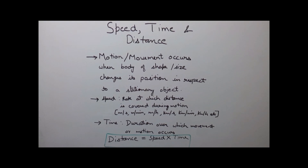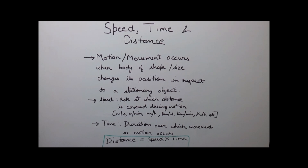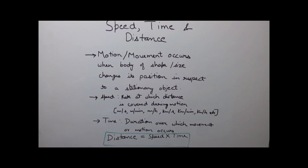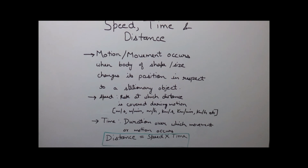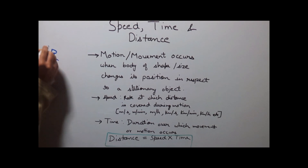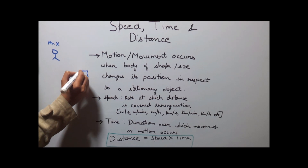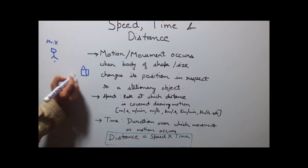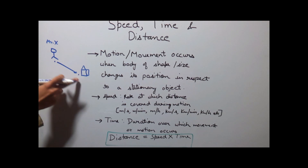Before moving directly to the questions, let us first tell you the basic concept of speed, time and distance. Motion or movement occurs when a body of any shape or size changes its position in respect to a stationary object. For example, if this is a person, say Mr. X, and this is a building, and he is moving from this point to this point, then this is called motion.